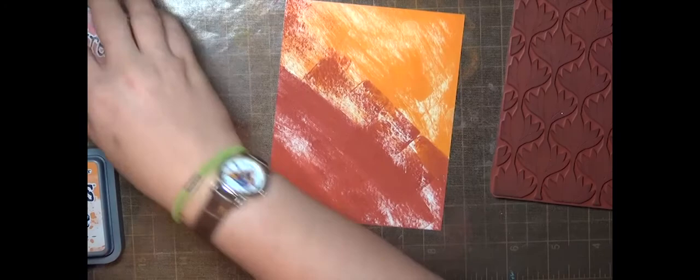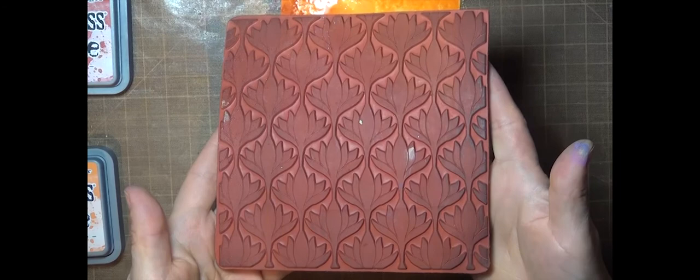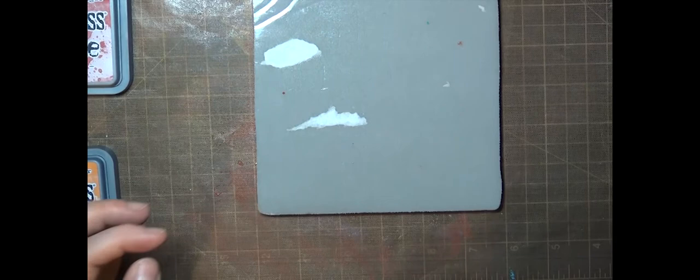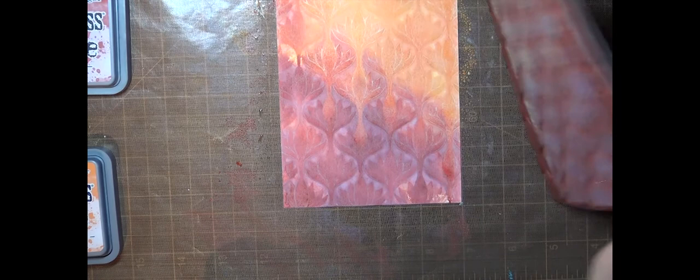For another twist on this technique, I started with my inky background, misted it to lift and activate the color, and then I laid a large background stamp over the panel while it was still wet. I weighed it down with a book until it was dry. This creates a beautiful pattern in the ink, and this works well with a larger or bolder design like this.